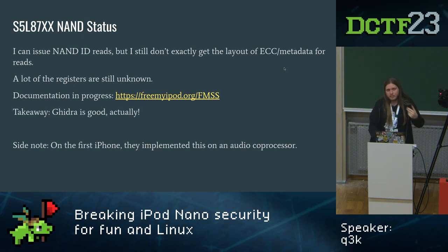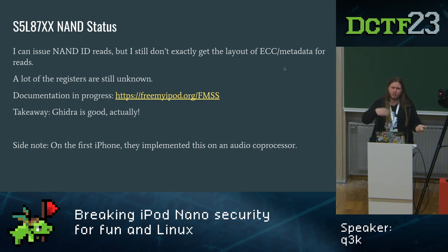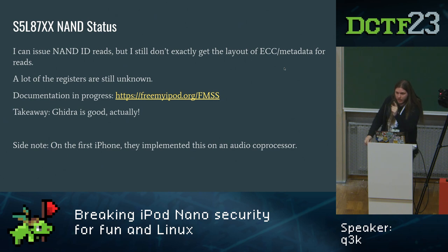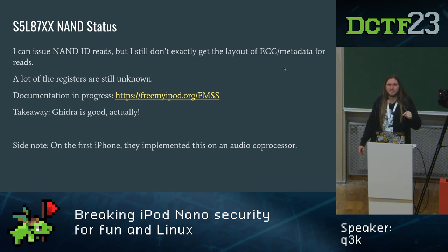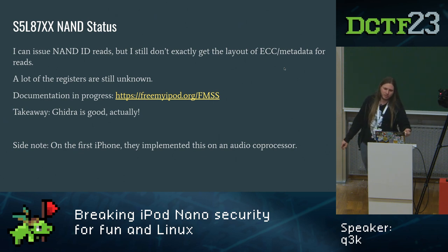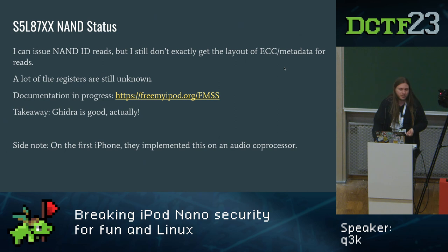I also ended up writing a Ghidra plugin for the custom architecture Apple came up with — this is a big shout-out to how easy it is to write Ghidra plugins. On the left-hand side is the bytecode, 64 bits per instruction; on the right-hand side is the decompilation output — in this case the identification routine sent to the NAND controller to request NAND chip identification. The Command Sequencer bytecode performs NAND register pokes as requested by the application processor. In Ghidra it's trivial: you define every instruction, define the behavior, and you get a decompiler. As a side note, on the first iPhone, the same NAND command sequencing functionality was implemented on a not-very-well-documented RISC 16-bit Samsung audio coprocessor — which is even more cursed than a custom CPU in your NAND controller.